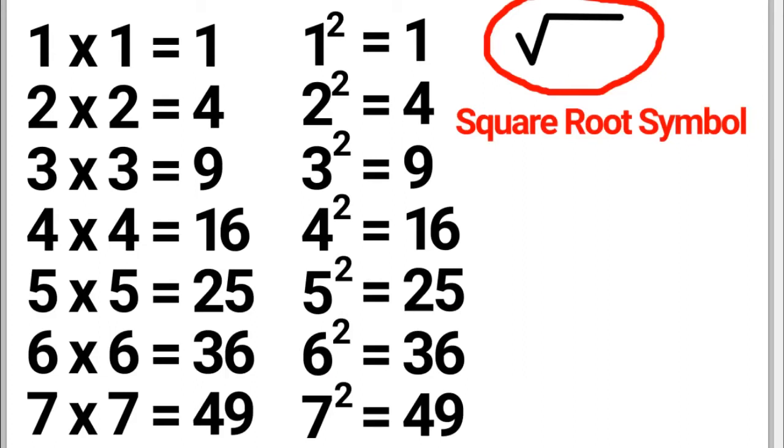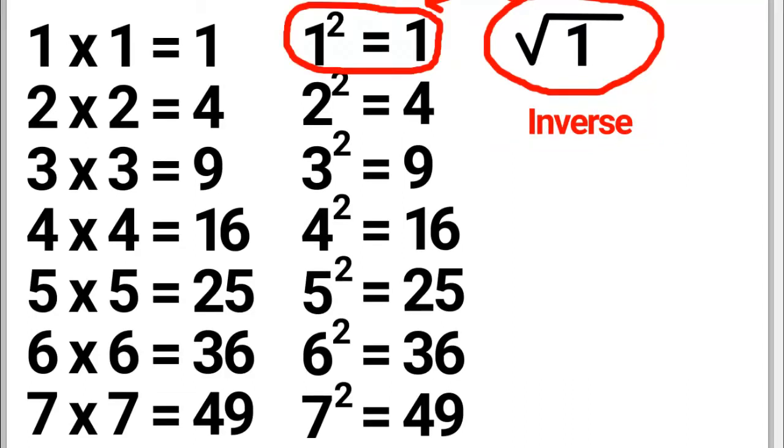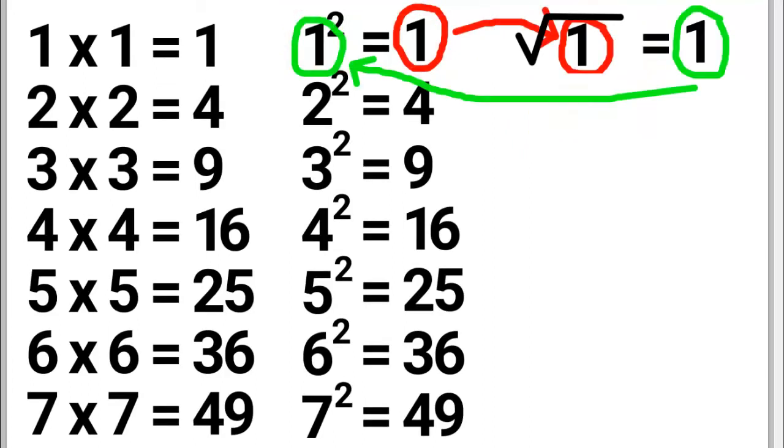This is the basic square root symbol. When you see a number inside the square root symbol, such as the number 1, you are taking the square root of 1. Taking the square root of 1 means you are inversing this exponent equation. 1 squared equals 1. So the square root of 1 is 1. Because if you take 1 times itself, the answer is 1.